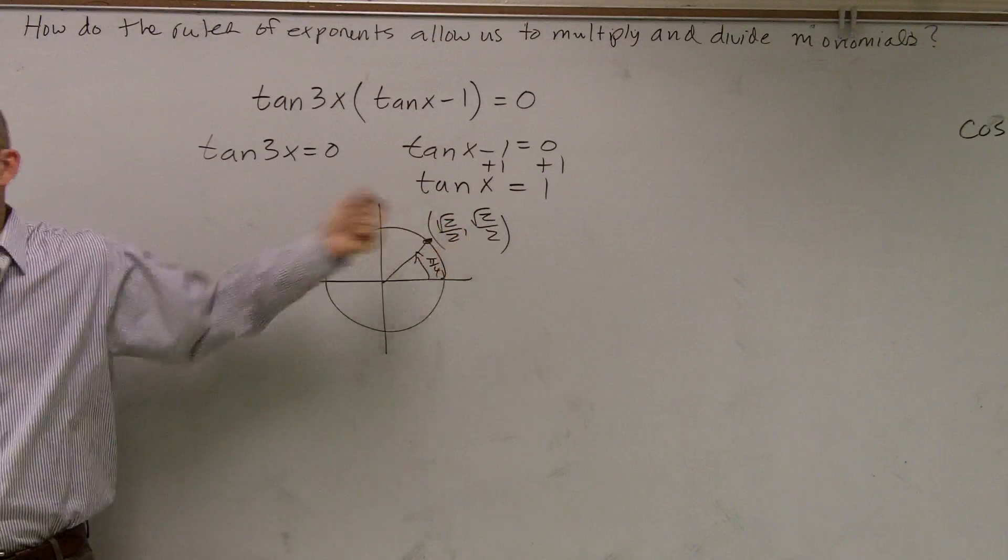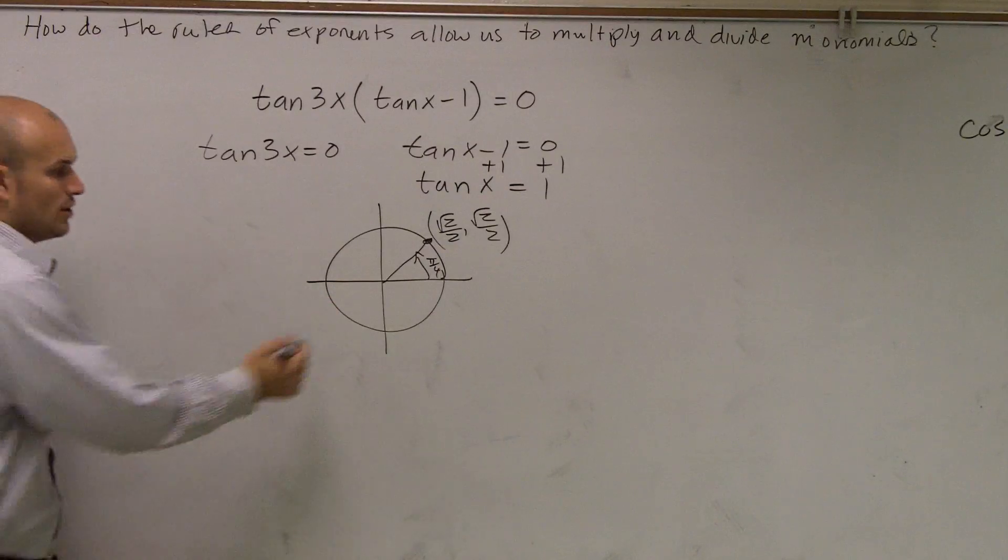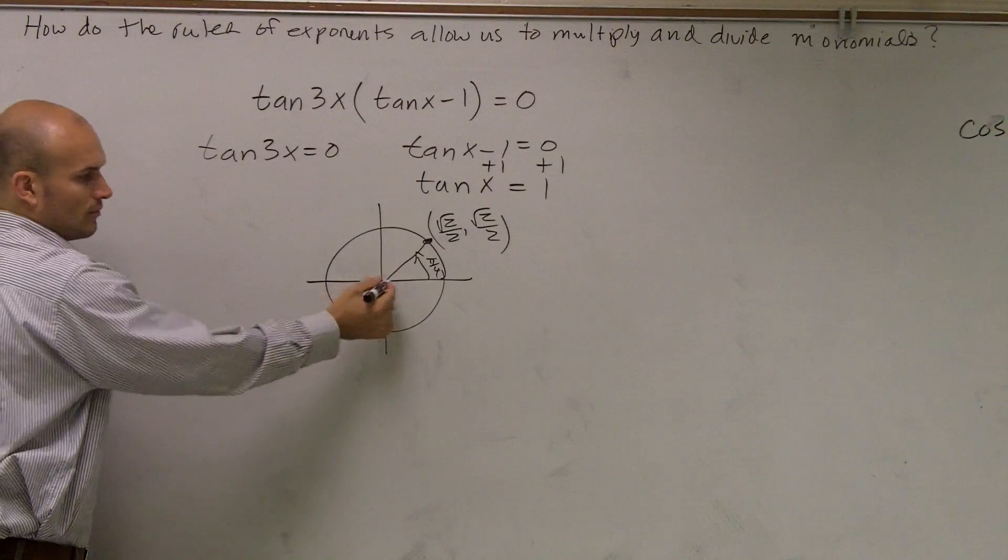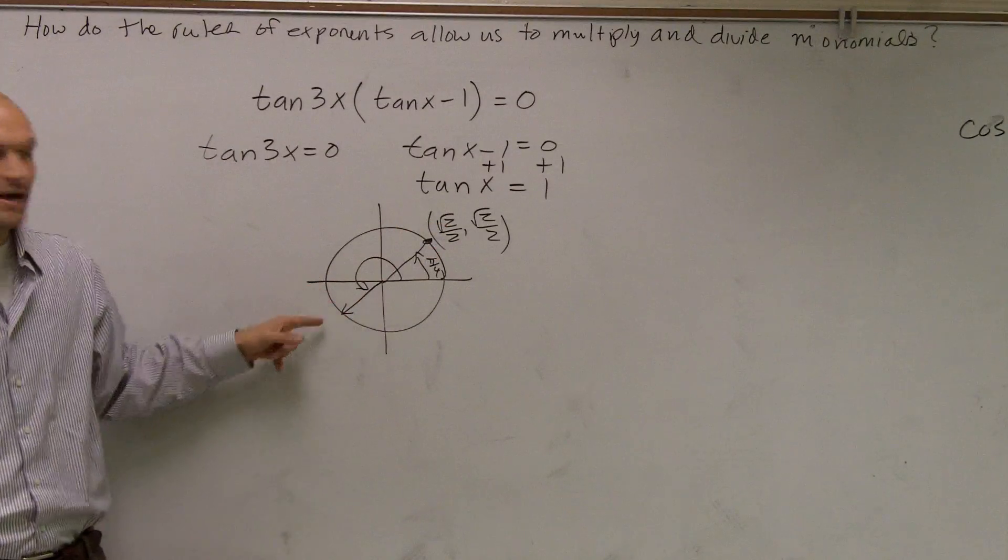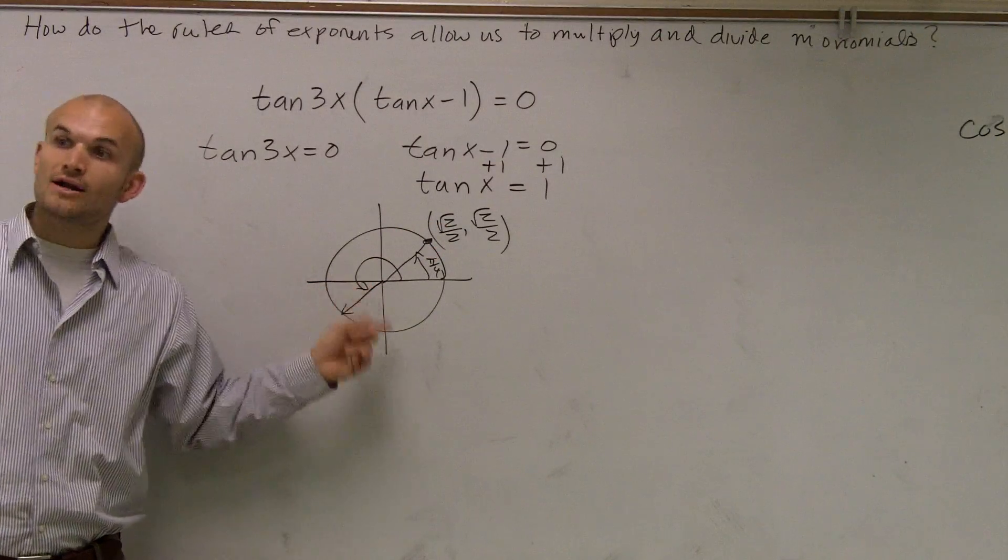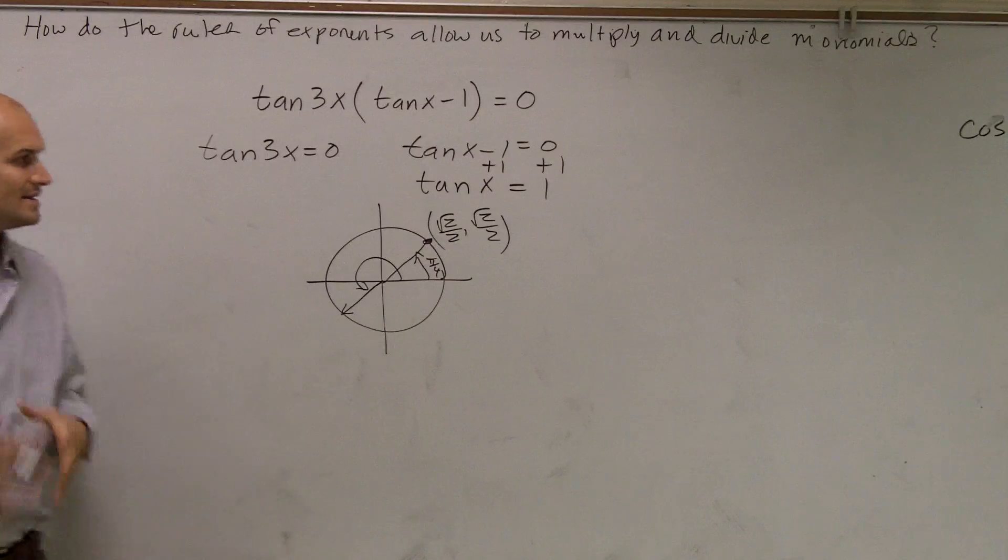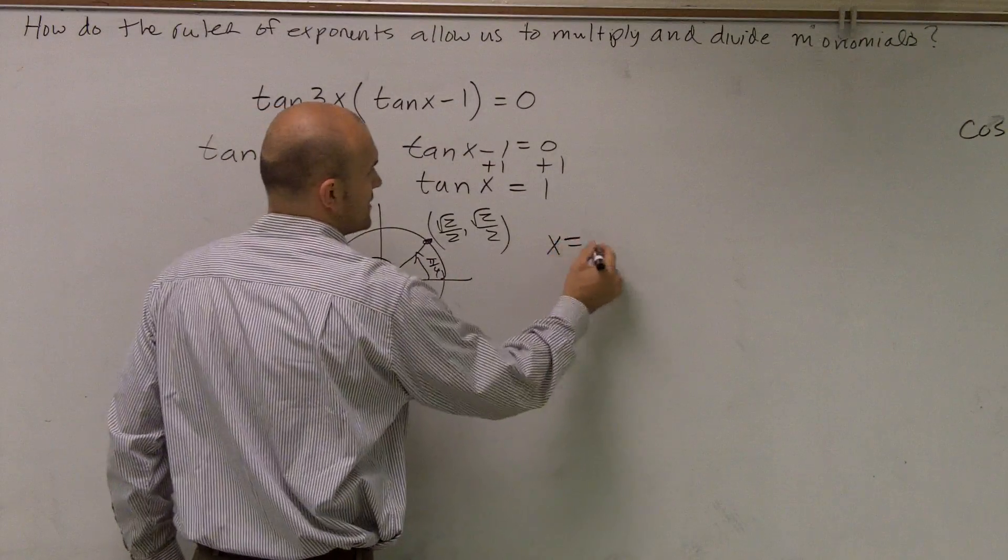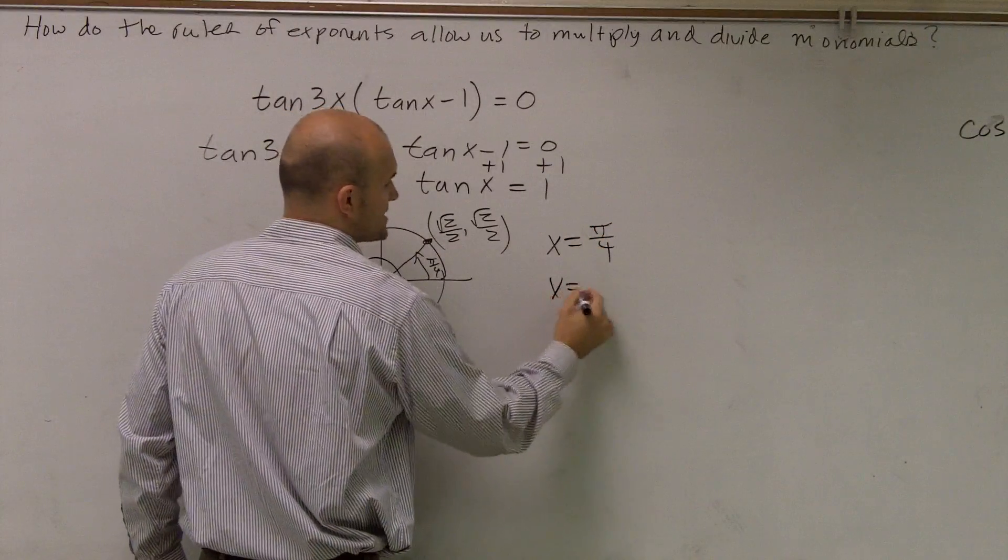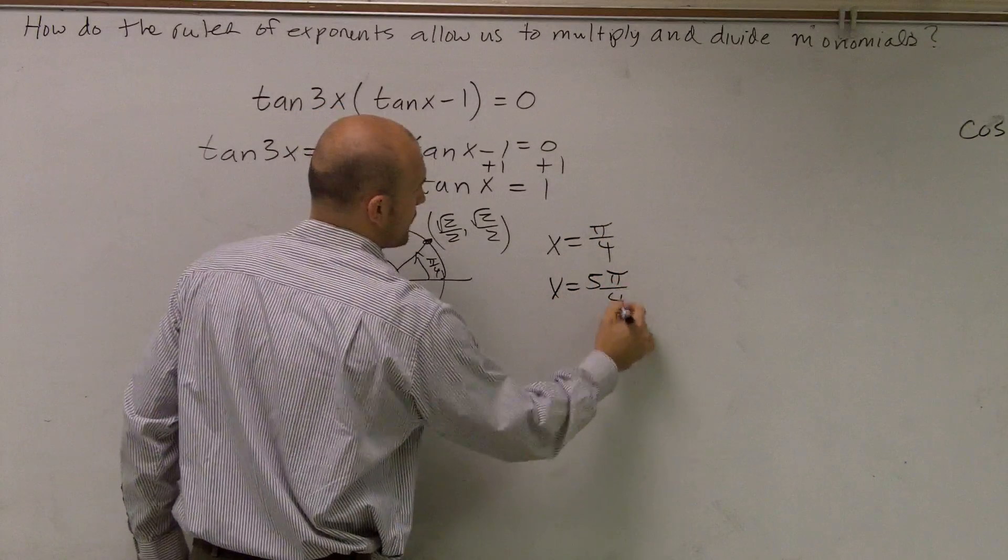it's obviously going to equal 1, right? The other point where it equals 1 is at 5π over 4, which is this angle all the way here, because that's negative √2 over 2 comma negative √2 over 2, right? And so what you could say is, x equals π over 4, and x equals 5π over 4.